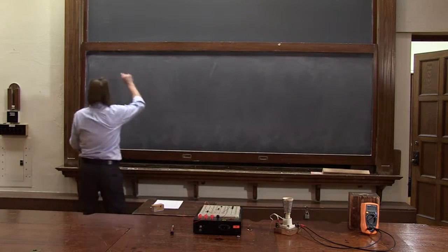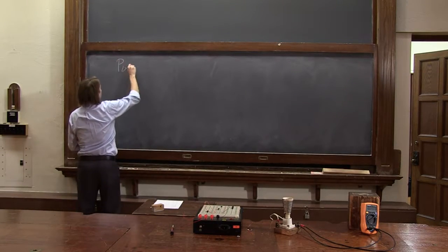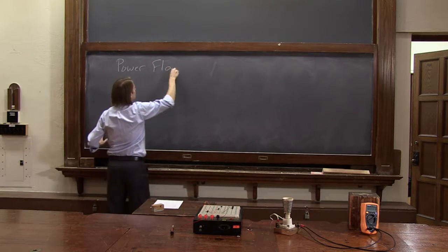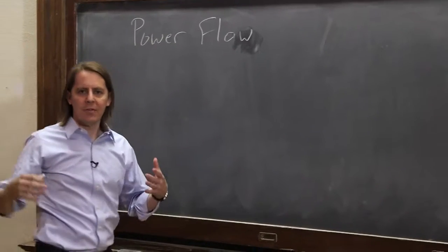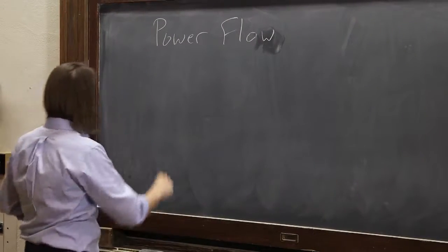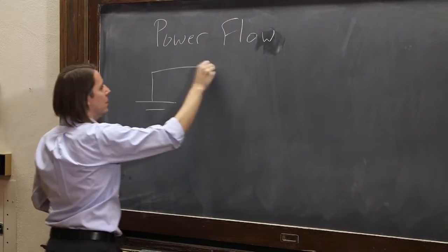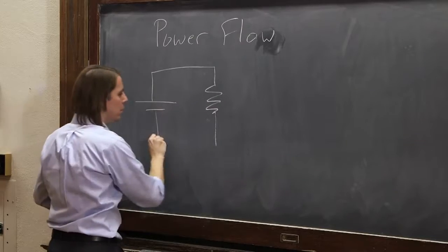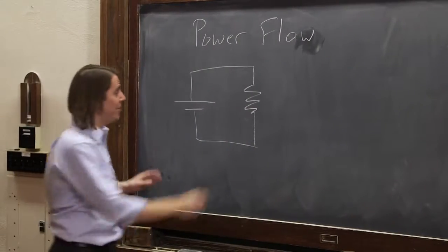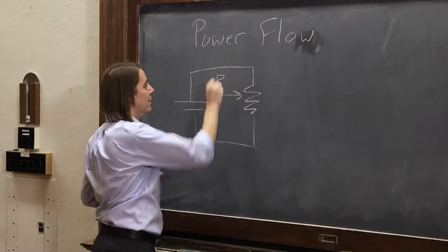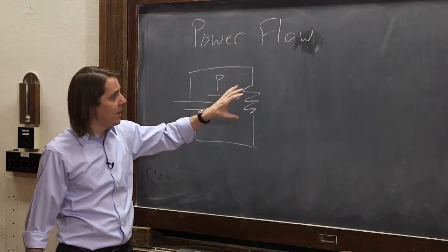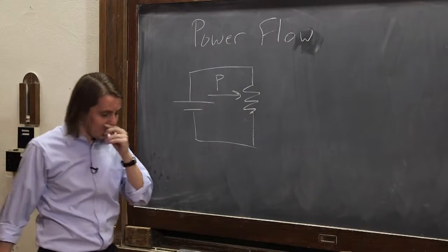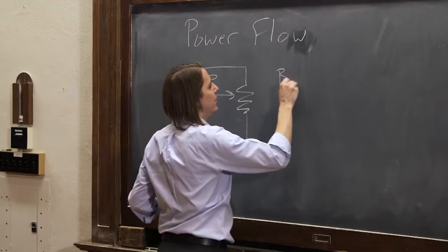Our final topic for this little circuit we've made is power flow. Circuits really just have electrical energy flowing through them. If we draw this circuit again, one way you could draw what's actually happening is that power is flowing from the battery out through the resistor.